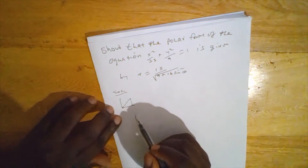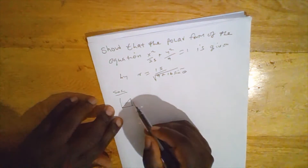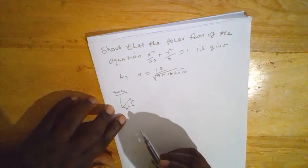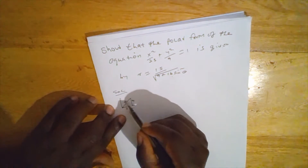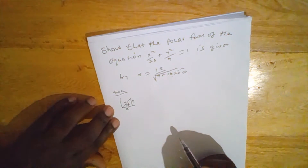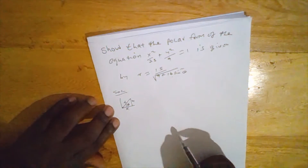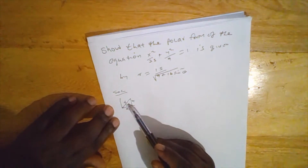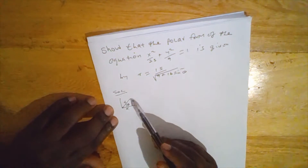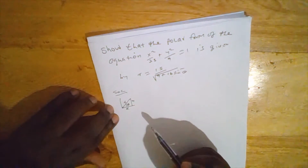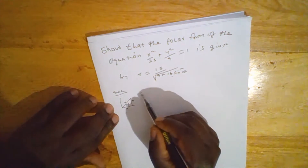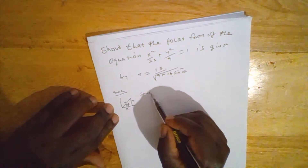We can sketch a right triangle where y is the opposite side, x is the adjacent side, r is the hypotenuse, and theta is the angle. We want to express r in terms of x, y, and the angle, so we apply SOHCAHTOA.